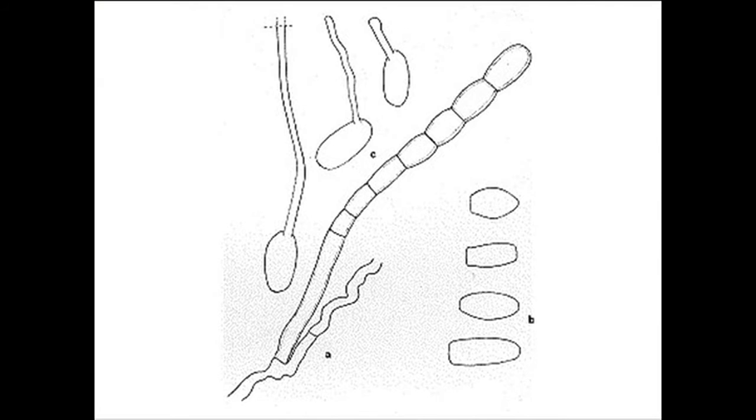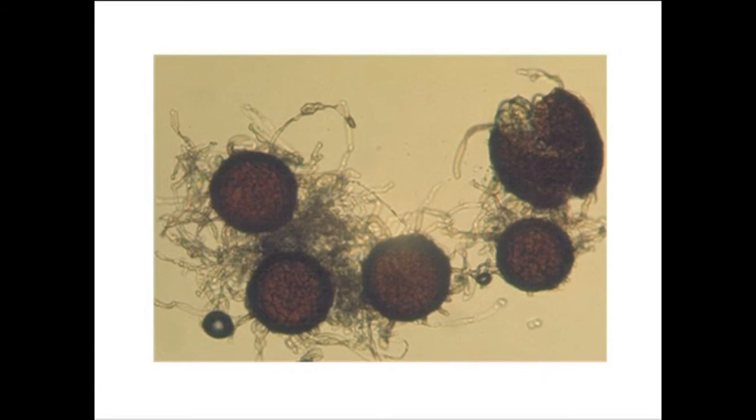The conidia of this pathogen are single-celled, hyaline, barrel-shaped, and in long chains. The conidial dimensions vary with the physiologic race and the host. Cleistothecia are globose, dark, with hyaline to dark brown myceloid appendages. They contain 8 to 18 asci, and the asci are pedicellate, ovate to broadly ovate, or ellipsoid. The number of ascospores per ascus is usually 2, rarely 3.